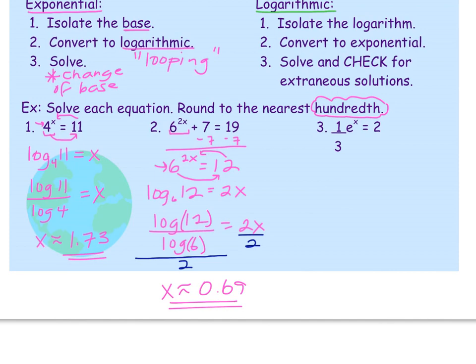One more: one-third times e to the x equals 2. Our base is e — it's the only thing the exponent is attached to, so we need to isolate it. The quickest way to get rid of a fraction is to multiply by the reciprocal. The reciprocal of one-third is 3, so multiply both sides by 3. The 3 cancels with the one-third, isolating e to the x, and the right side gives us 2 times 3 equals 6.